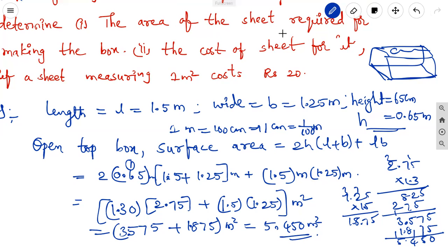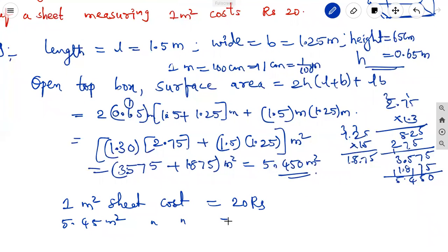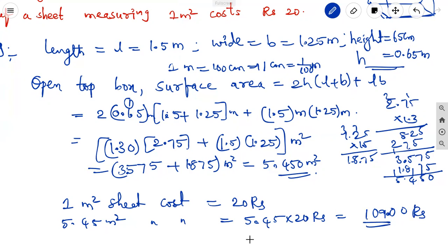This is the area of the sheet required for making the box. Next, for the cost: 1 m² sheet costs 20 rupees, so 5.45 m² costs 5.45 × 20 = 109 rupees. This is the answer to part one and part two of the first problem.